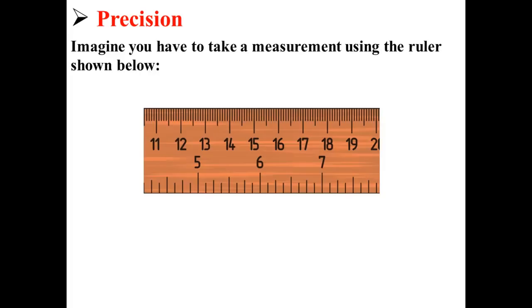This ruler takes three different measurements. It can take measurements in inches, as shown by the red arrow. It can take measurements in centimeters, as shown by the blue arrow. And it can take measurements in millimeters, as shown by the green arrow.